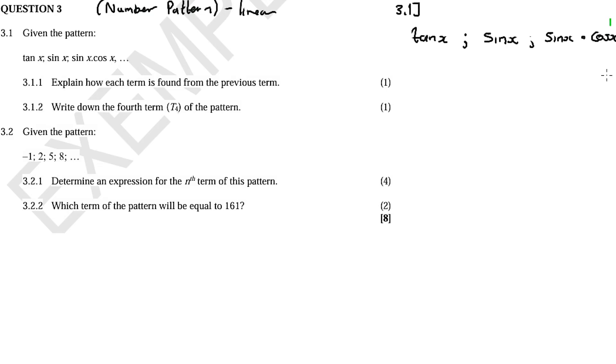In number patterns, it involves trigonometric ratios - your cos, your sin, and your tan. Now, in 3.1.1, they want us to explain how each term is found from the previous term.